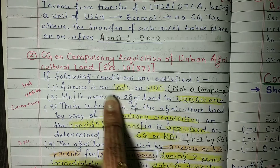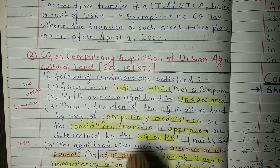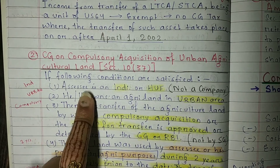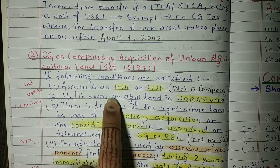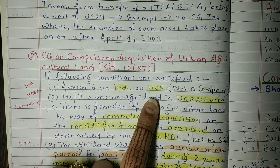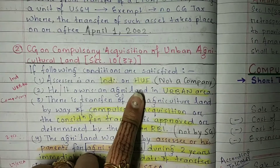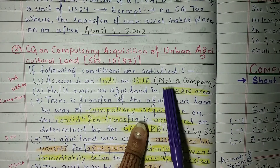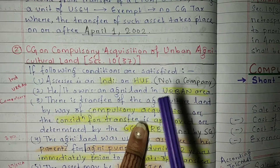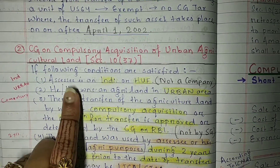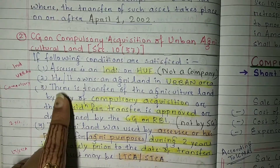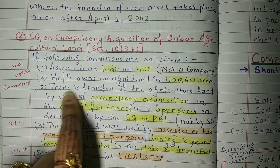There are some conditions. First: the assessee has to be an individual or a HUF — Hindu Undivided Family. If a company owns urban agricultural land and sells it, they will not get exemption. The assessee has to be an individual or a HUF.